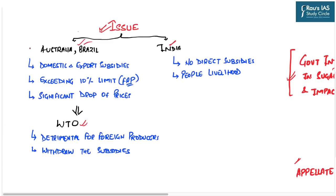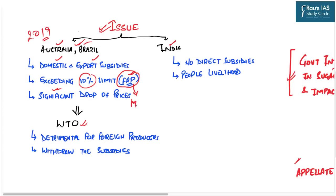This issue started in 2019 when countries like Australia and Brazil contested that India's system of subsidies for sugarcane farmers goes against the principles of international trade. They claimed that India provides both domestic and export subsidies to sugarcane farmers, and these subsidies exceed the 10% limit provided by GATT. The Fair and Remunerative Price (FRP) — a form of minimum price provided to sugarcane farmers — is counted as a direct subsidy by these countries.